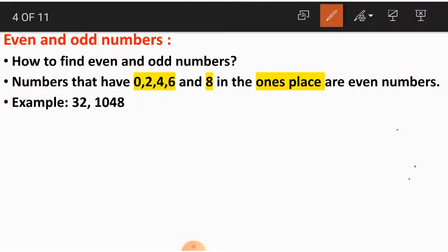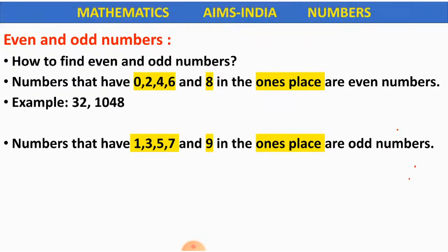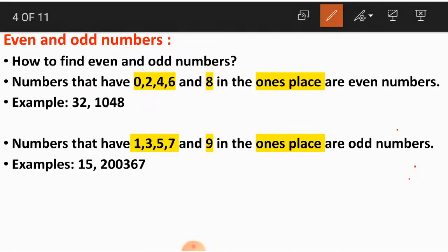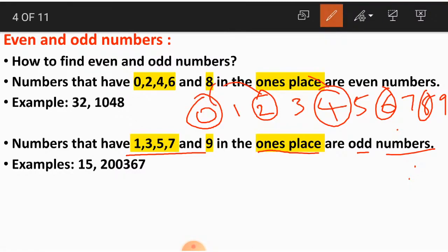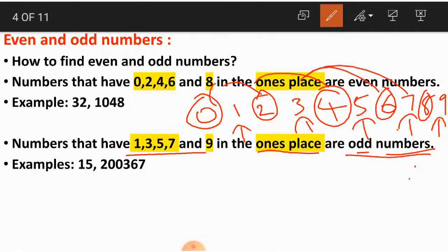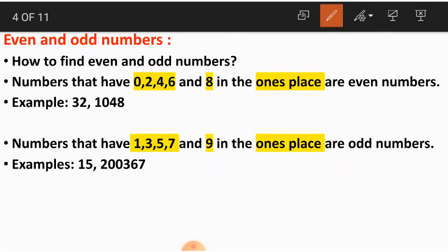Coming to the next: odd numbers. Numbers that have 1, 3, 5, 7 and 9 in the ones place are odd numbers. As we have seen, starting from 0 to 9, the alternate numbers beginning from 0 — which are 0, 2, 4, 6 and 8 — fall into the even numbers category. So the remaining numbers — 1, 3, 5, 7 and 9 — fall into which category? Odd numbers. Numbers having 1, 3, 5, 7 and 9 in the ones place are odd numbers.